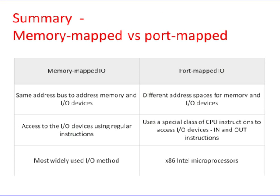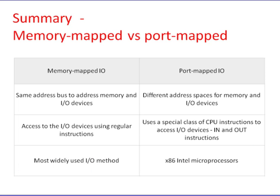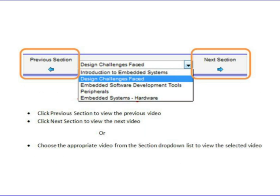The table summarizes the differences between memory-mapped and port-mapped I/O. In memory-mapped I/O, the same address bus is used to address both memory and I/O devices, regular instructions are used to access I/O devices, and it is the most widely used I/O method. In port-mapped I/O, a different address space is used for memory and I/O devices, special CPU instructions (IN and OUT) are used to access I/O devices, and it is used in x86 Intel microprocessors.